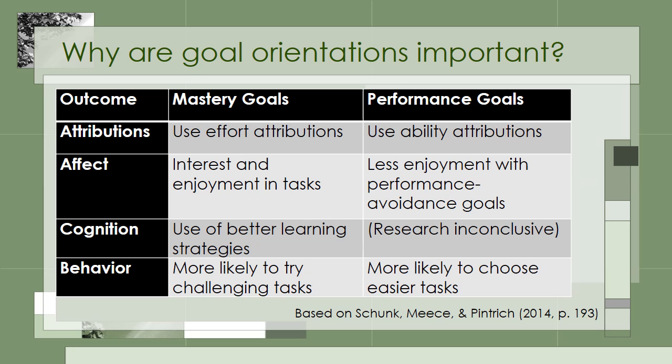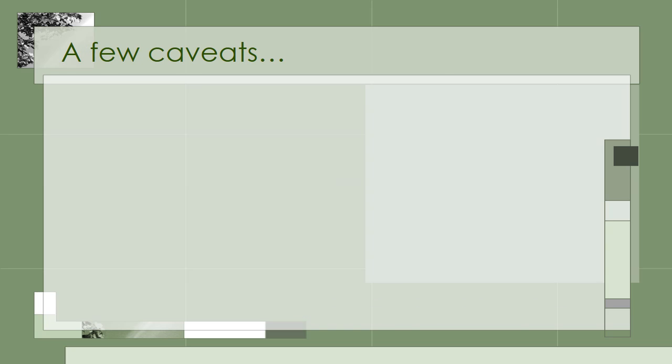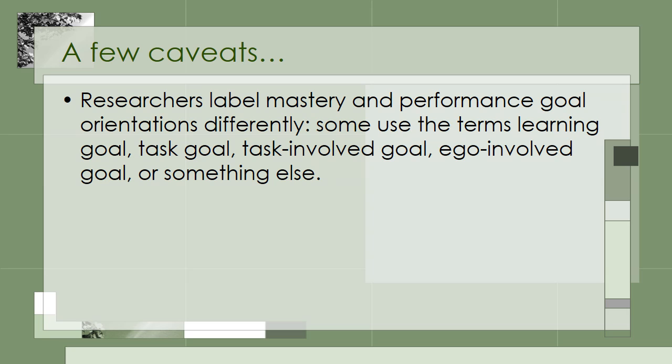Overall, it would be nice to say that mastery goals are good and performance goals are bad, but it's simply not that easy. Several studies have found that performance approach goals lead to outcomes as good as mastery goals, and sometimes students with performance approach goals have outperformed students with mastery goals. This is a good time to mention a few caveats. First, researchers label mastery and performance goal orientations differently — some use the terms learning goal, task goal, task-involved goal, ego-involved goal, or something else. So not everyone uses the same terminology in their theories.